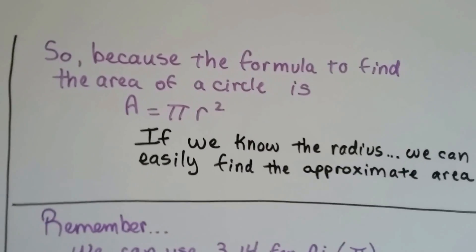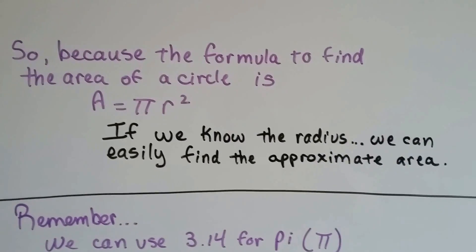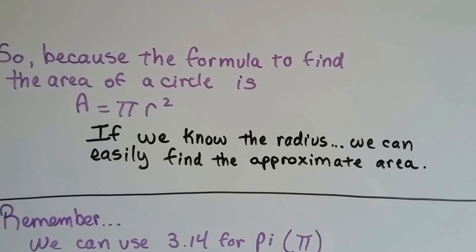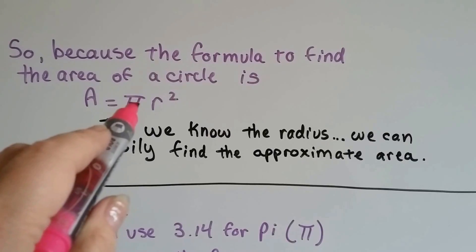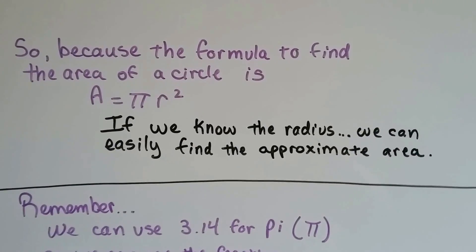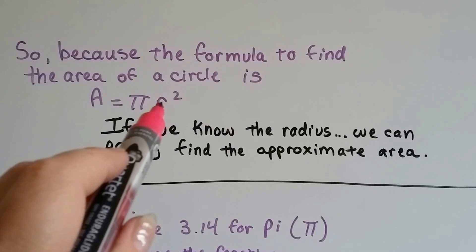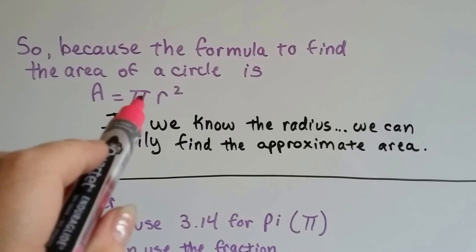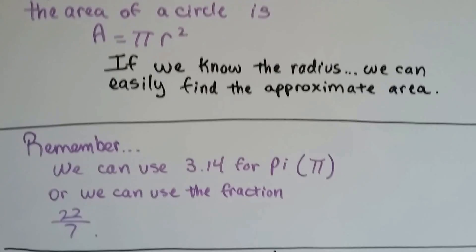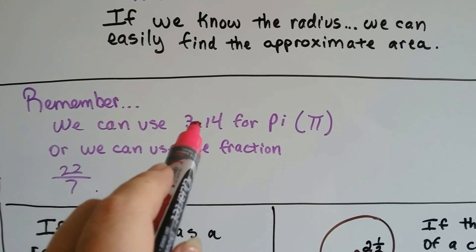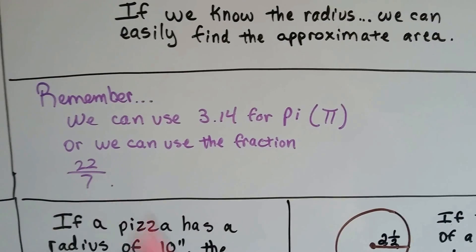So because the formula to find the area of a circle is area equals pi r squared, if we know the radius, we can easily find the approximate area. And I say approximate again because we're using pi and it's not perfect. We just multiply the radius times itself, multiply that by pi, and we've got pretty much our approximate area there. So remember we can use 3.14 for pi, or we can use the fraction 22 over 7.